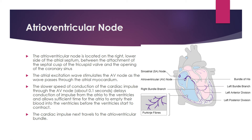The atrial excitation wave stimulates the AV node as it passes through the atrial myocardium. The slower conduction speed through the AV node — only about 0.1 seconds — delays the conduction of the impulse from the atria to the ventricles, allowing sufficient time for the atria to empty blood into the ventricles before the ventricles start to contract.